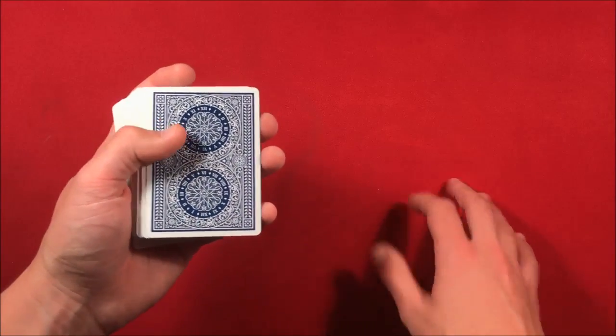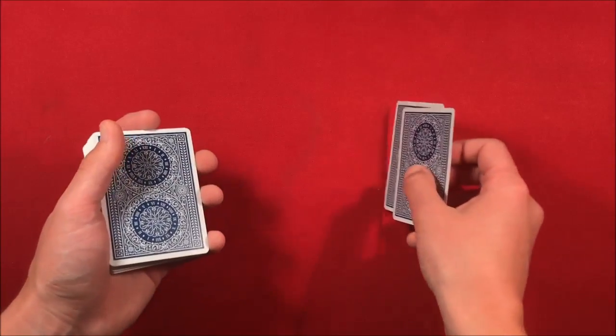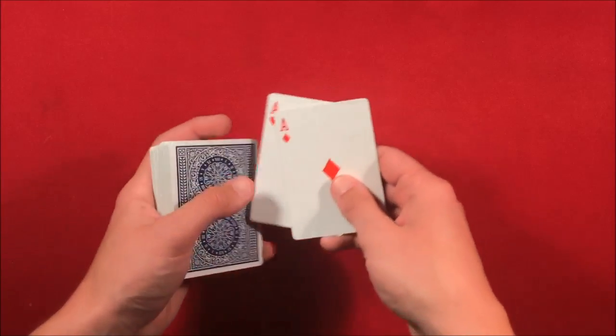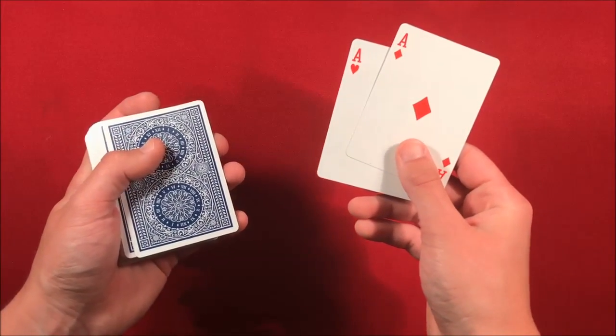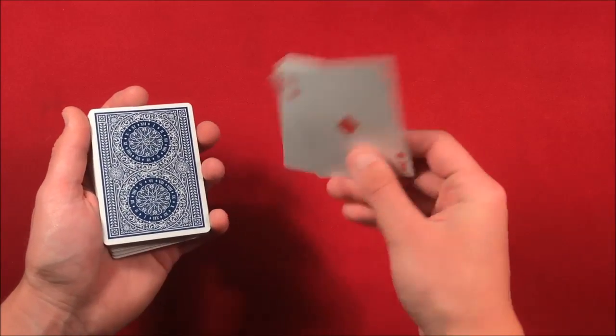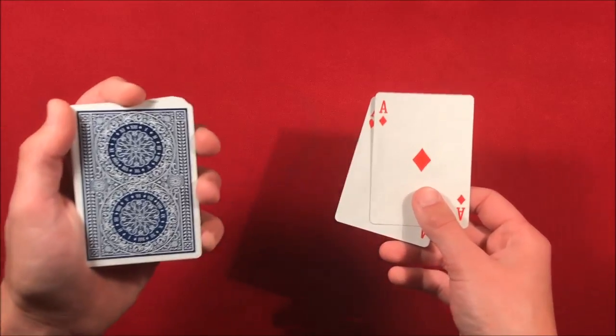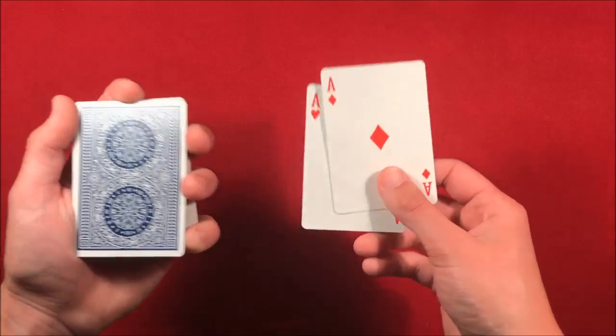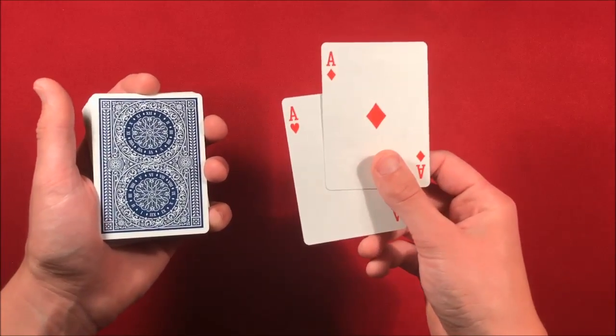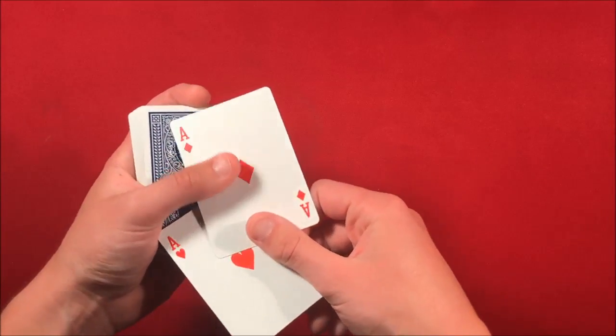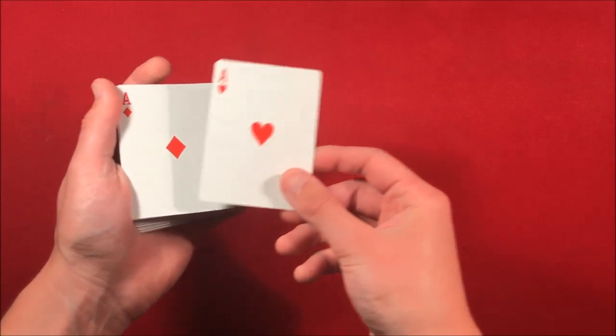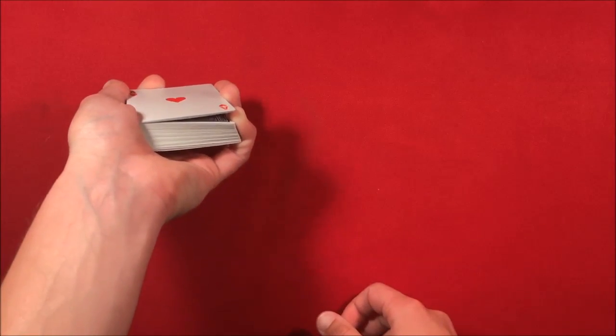So from here you just take them off. Make sure not to explain them too much. Just say look I'm just going to be using these two red aces. And as you're kind of just flashing these around you are getting a pinky break underneath the top card. And then as you're telling the spectator that you're going to be using these later on in the trick, you just put both of them on top of the pinky break.